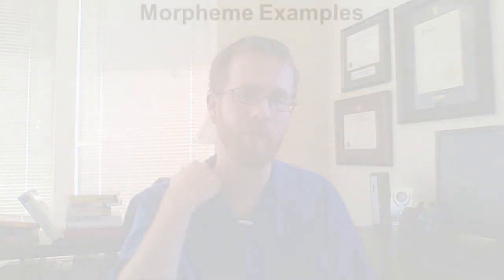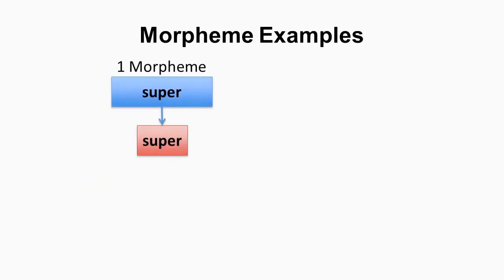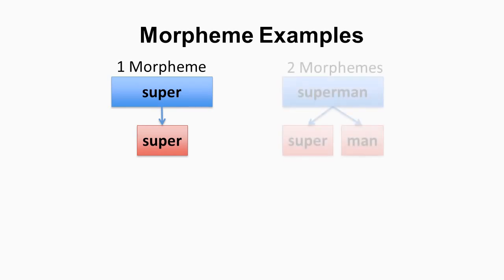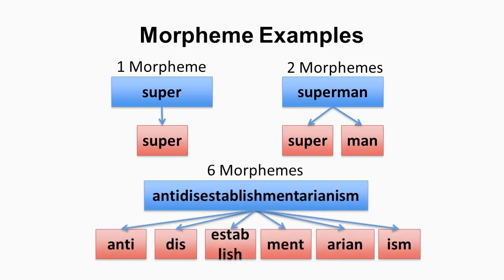For example, the word 'super' is a single morpheme — you can't break it down into smaller parts. But the word 'superman' is two morphemes: 'super' and 'man.' And then there's one of the longest words in the English language, 'antidisestablishmentarianism,' which is at least six morphemes: anti, dis, establish, and so on.